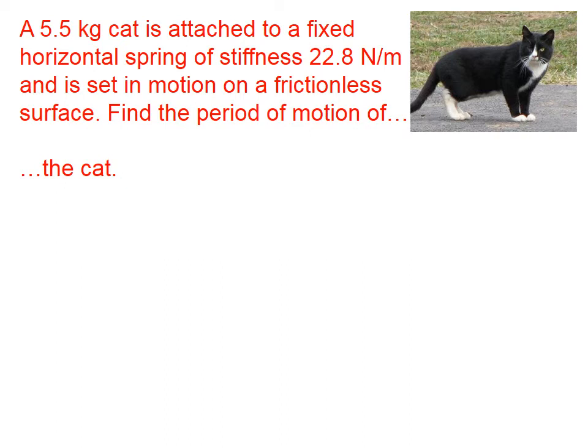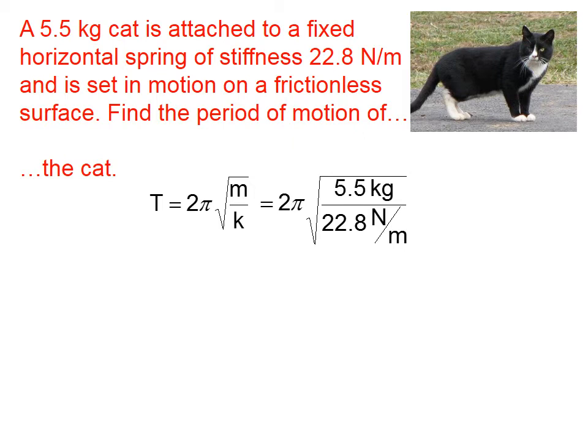Let's do a problem. We're going to take a cat and attach it to a fixed horizontal spring that has a certain spring constant, and we're going to set it in motion. This cat is going to oscillate back and forth. Find the period of motion of the cat. In other words, how long does it take the cat to go all the way over and come all the way back?